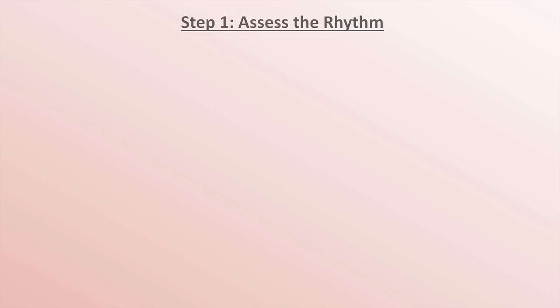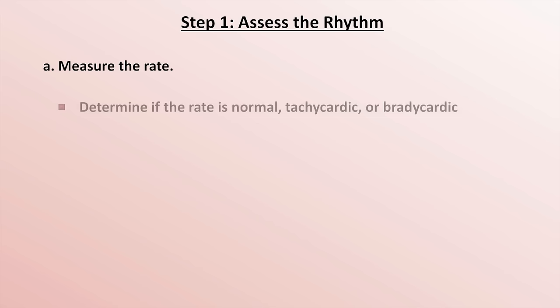Step one, which is the longest and most complicated of the three steps, I've broken down into five parts. First, measure the rate and determine if it's normal, tachycardic, or bradycardic.